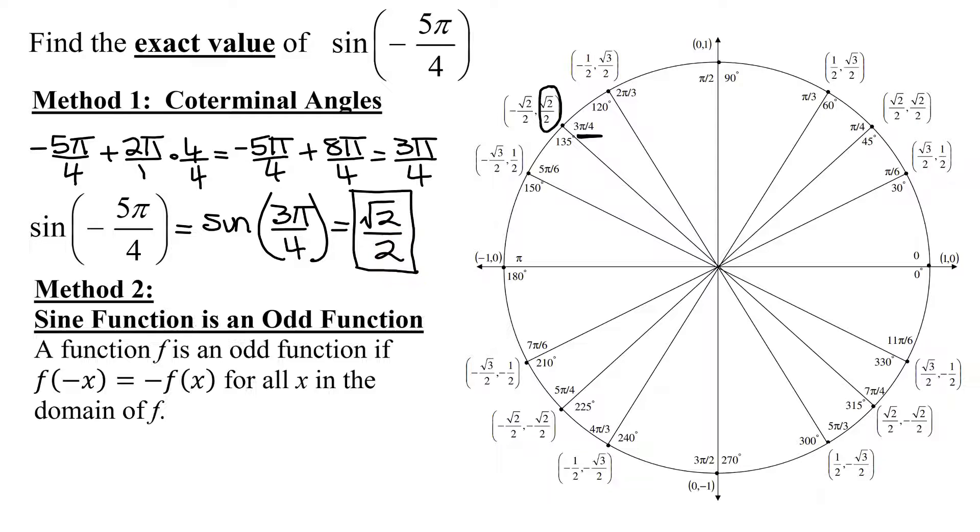Now in method 2, I'm going to use the fact that the sine function is an odd function. Remember a function f is an odd function if f of negative x equals negative f of x for all x in the domain of f. So in this case, the sine of negative 5π divided by 4, using this definition here, is going to equal the negative sine of positive 5π over 4.